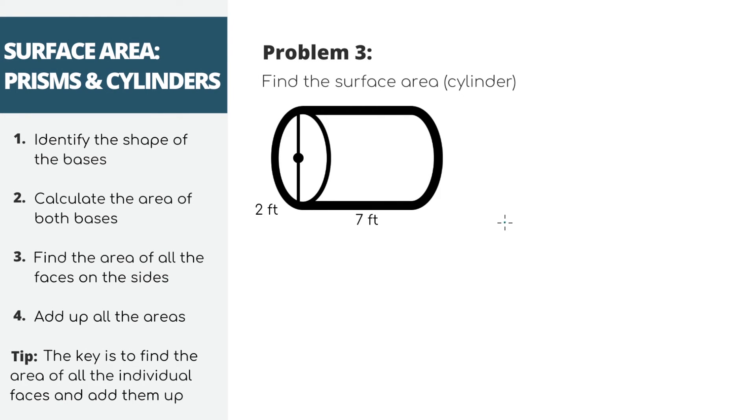Next problem. We have a cylinder, and it looks a little different than your typical prism, but the same steps still apply. Looking at the shape of the base, the bases are just circles. If you think of it, a can of soup is a cylinder, a roll of paper towels is a cylinder, and if you look at it from the top, the bases are circles.